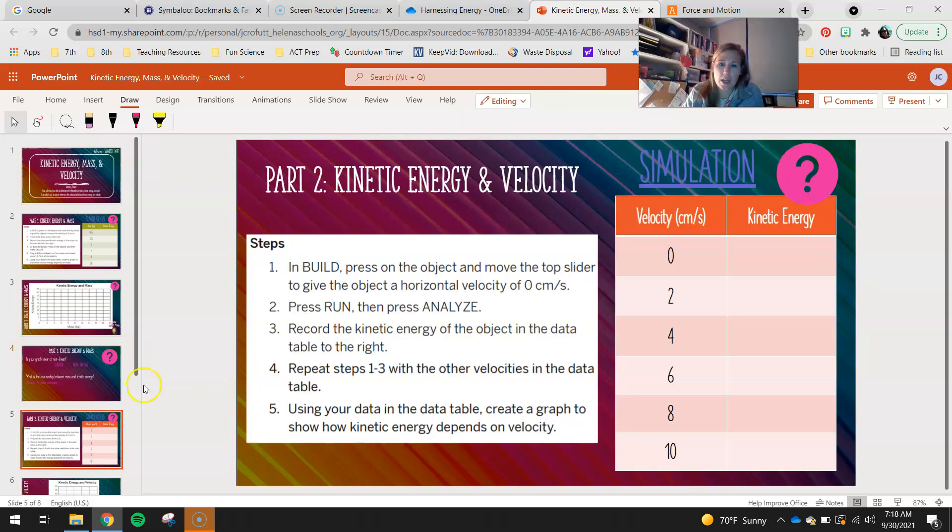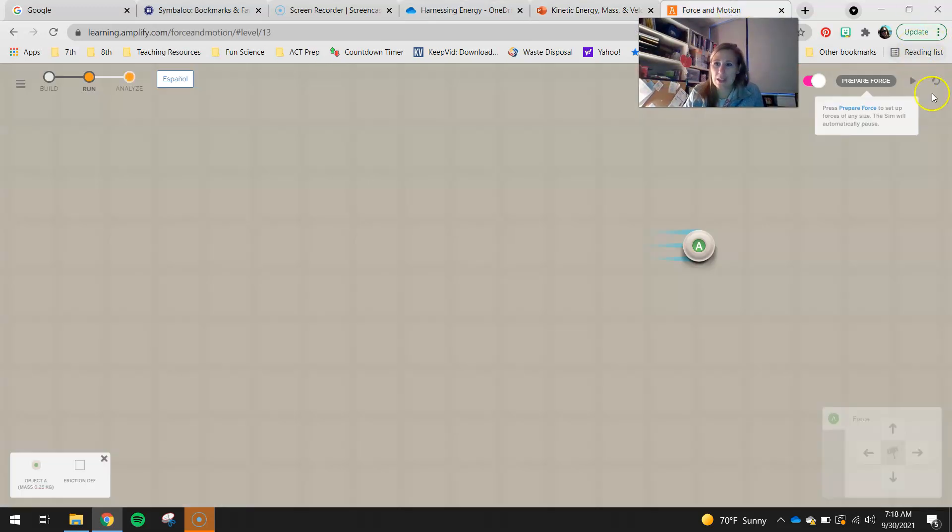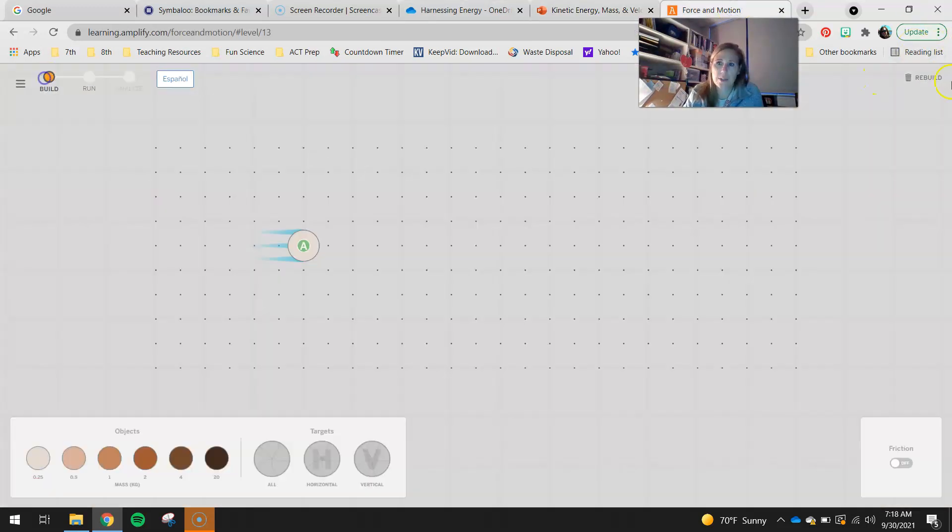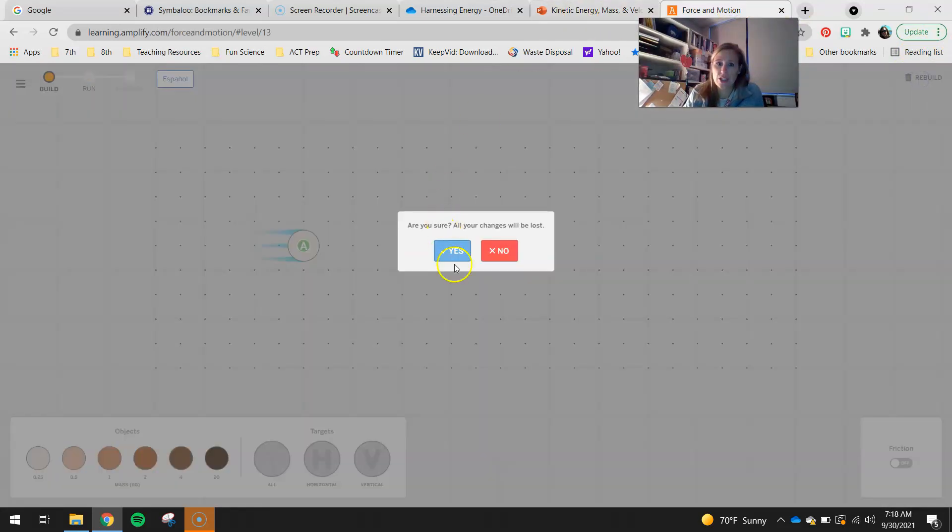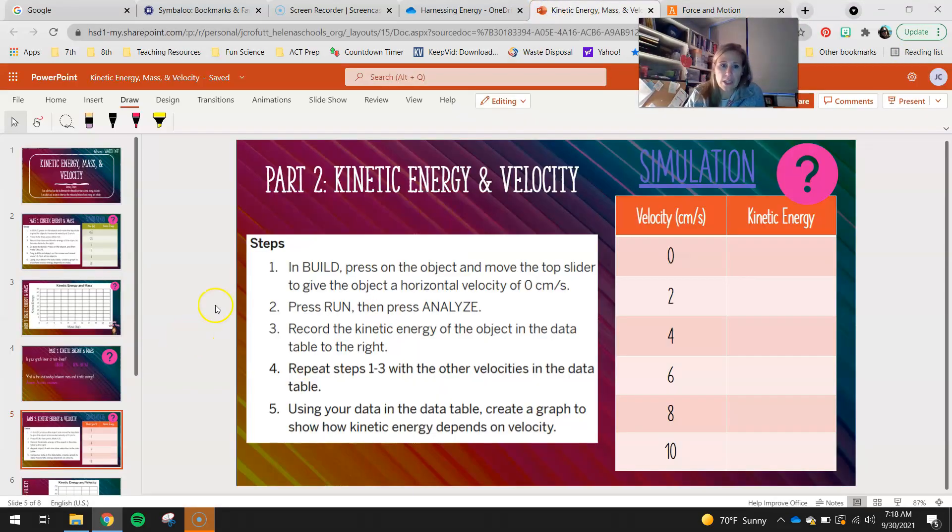Moving on. Part two is very similar. You guys will be in that exact same simulation. You guys will be in build. Your directions are going to be slightly different though. So in build, press on the object and move the top slider to give the object a horizontal velocity of zero centimeters per second. Press run, then analyze. So zero centimeters per second means it's not moving. So that's our velocity.